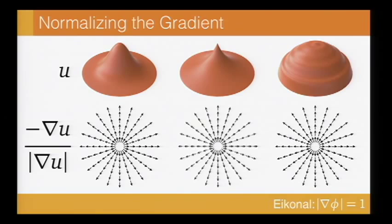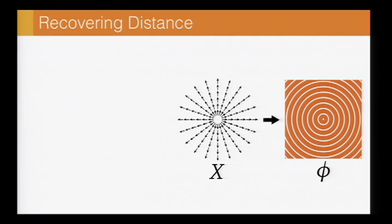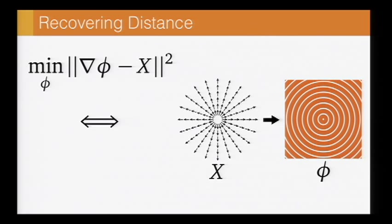From there, if we want to recover the distance function itself, suppose I call this normalized gradient field x, then we're gonna look for the function phi whose gradient is as close as possible to x. Or equivalently, we're just gonna solve a standard Poisson equation with the divergence of x on the right-hand side.